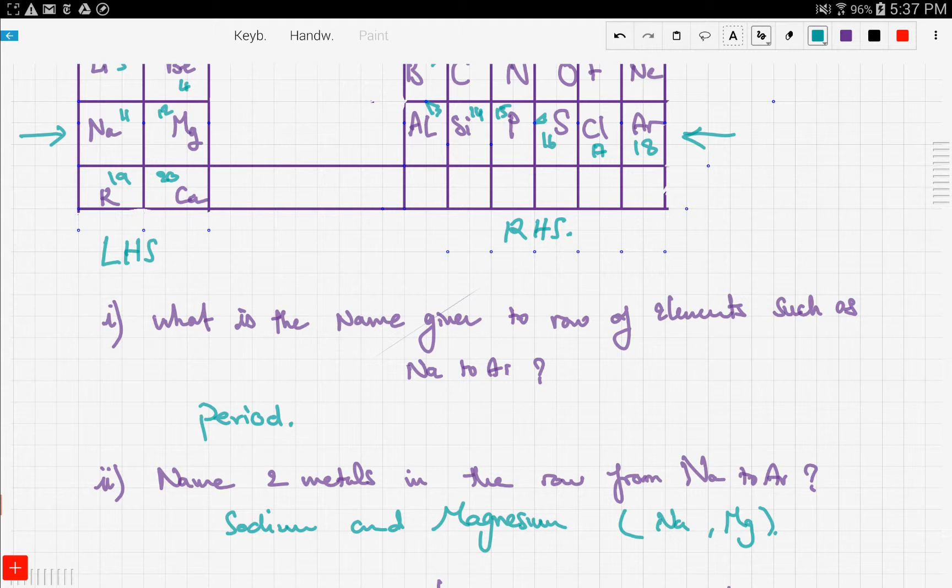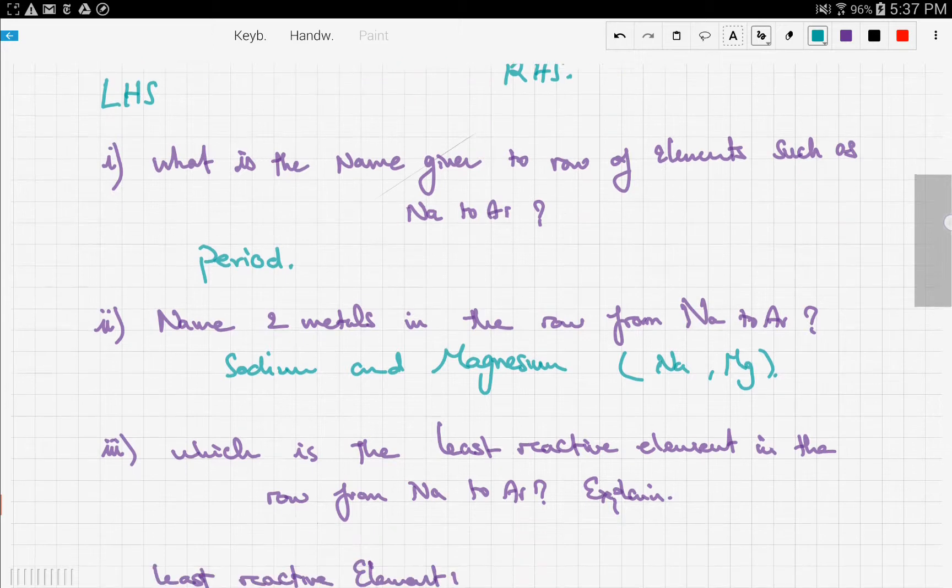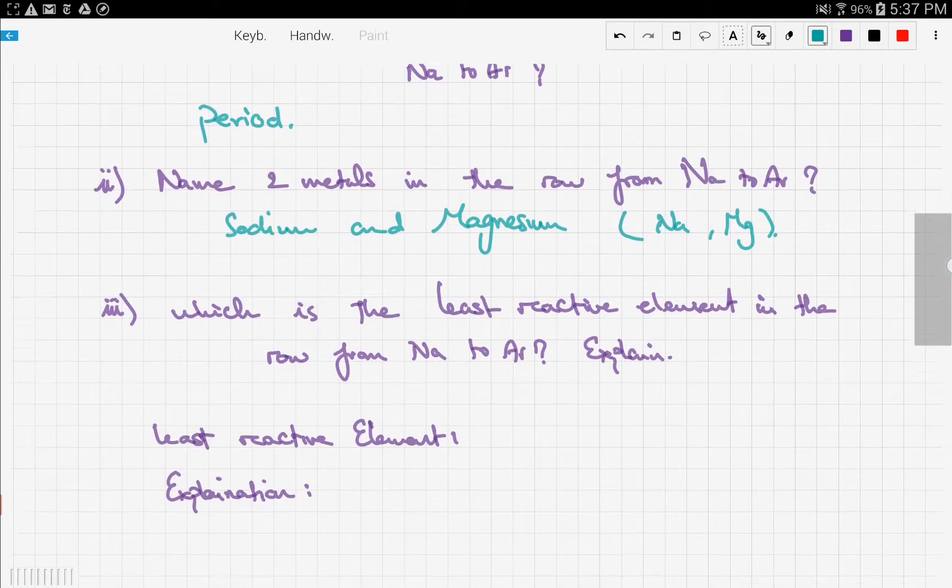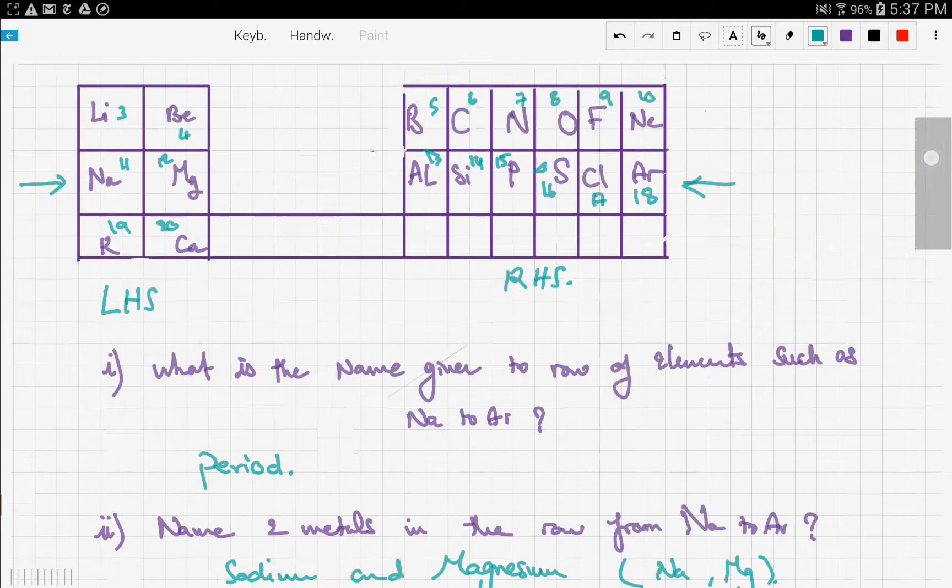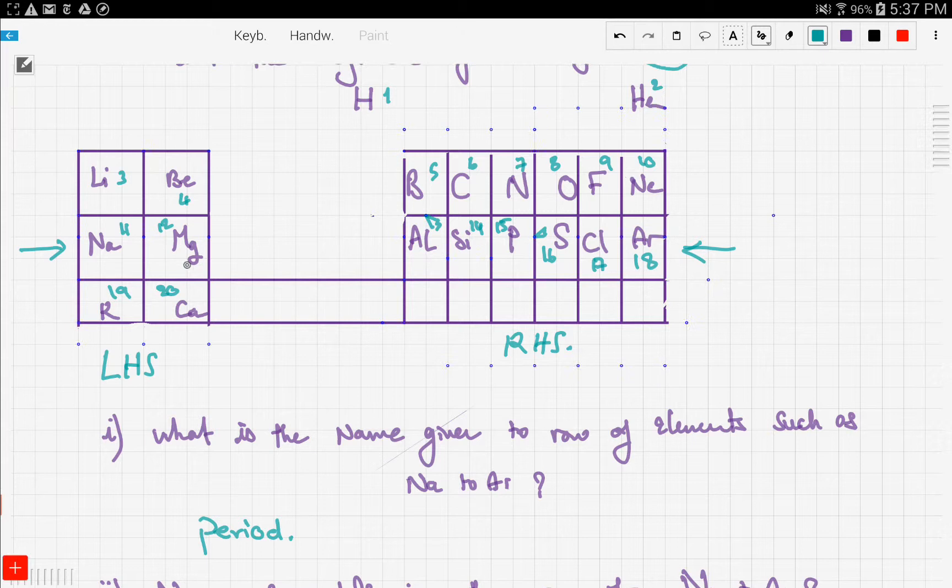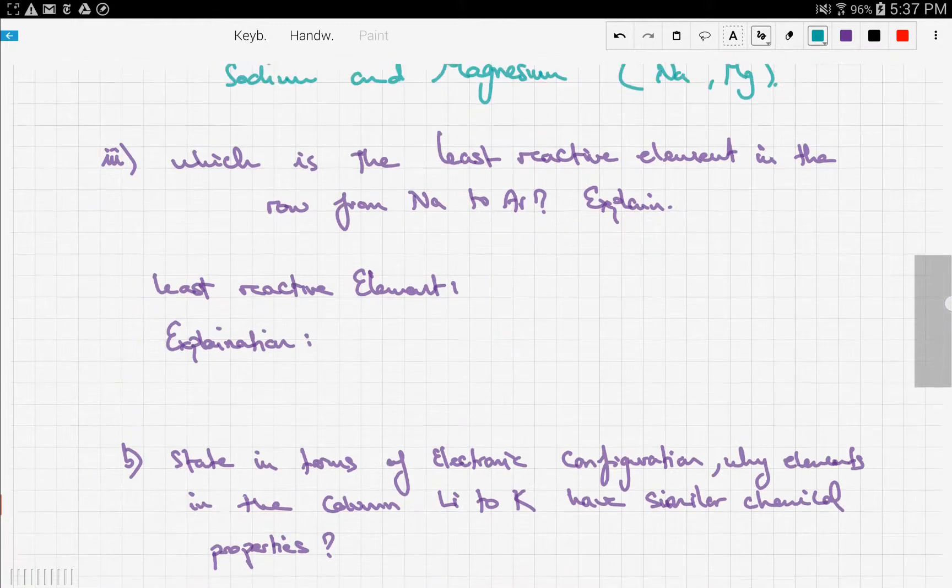left. So we only have sodium and magnesium, which are Na and Mg. He doesn't expect you to write the symbols but to write in words, that's why he said 'name.' Next, which is the least reactive element in the row from sodium to argon? This row has sodium, magnesium, aluminum, silicon, phosphorus, sulfur, chlorine, and argon. In previous